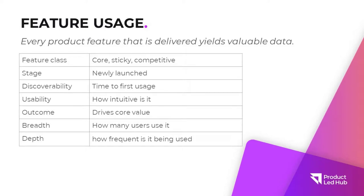Feature usage is key. Every product feature that is delivered yields valuable data. You're building features — you invest a lot of time from research to development to releases to bug fixing. Every feature is very meaningful and has that valuable data. So we try to help you classify those features and address that in your analytics, as first-class citizens. There are events, but there is also feature — a feature has a name, you deliver it, there's a delivery date.